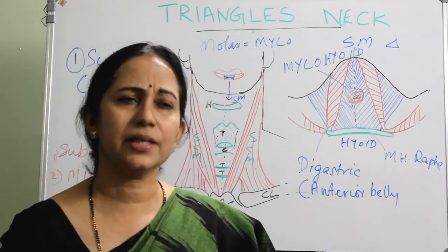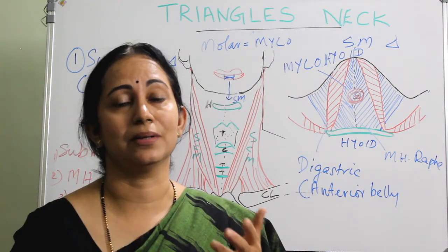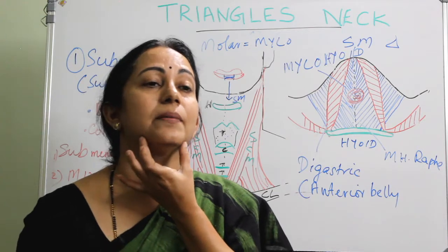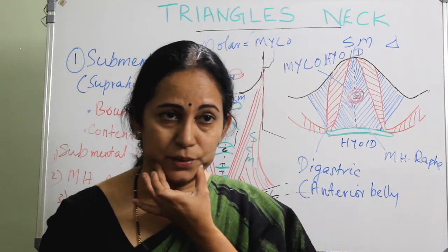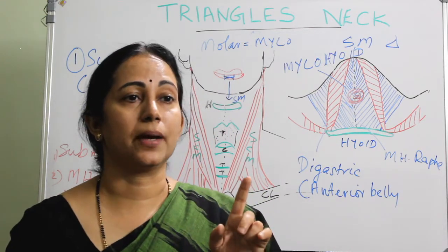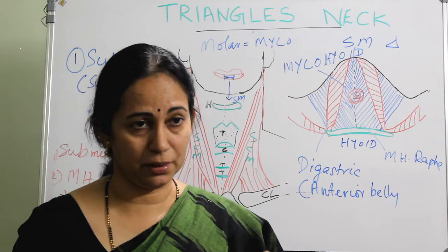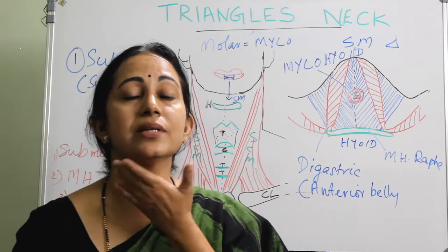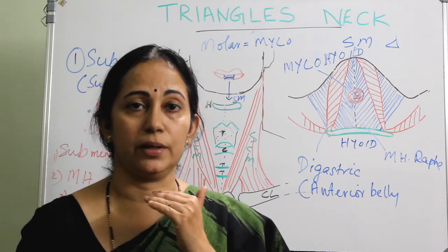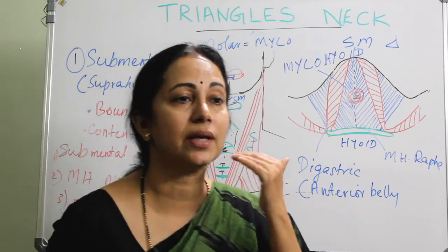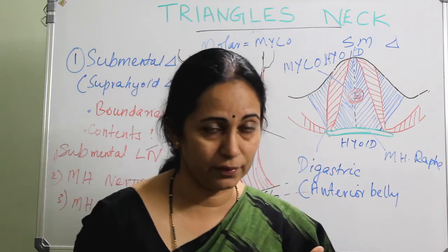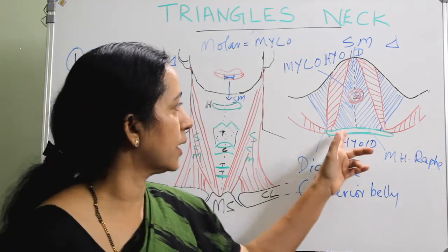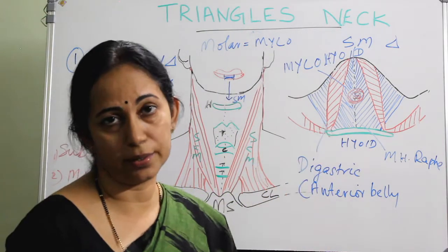It is simple to remember: the muscle is located near the mandible, so it is supplied by the mandibular branch of the trigeminal nerve. The mandibular branch gives off the inferior alveolar nerve, and from the inferior alveolar nerve comes the mylohyoid nerve.